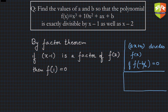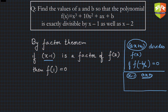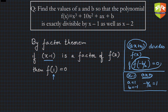Comparing x minus 1 with the general form ax plus b: a is 1, the coefficient of x, and b is minus 1, the constant term. So minus b by a is simply 1. Hence f of 1 must be equal to 0. It's important to remember the general form so you can handle any expression like 3x minus 5 or 7x minus 2.